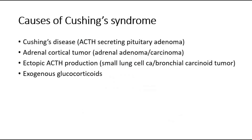Moving on to the causes of Cushing's syndrome. The first cause is Cushing's disease, due to a pituitary adenoma secreting excessive ACTH, which stimulates the adrenal cortex to release more cortisol, resulting in excessive cortisol. The second cause is an adrenal cortical tumour, which can be an adrenal adenoma or adrenal carcinoma. Another cause is ectopic ACTH production, which can be due to small cell lung carcinoma or bronchial carcinoid tumour. And the most common cause overall is exogenous glucocorticoids due to medications.